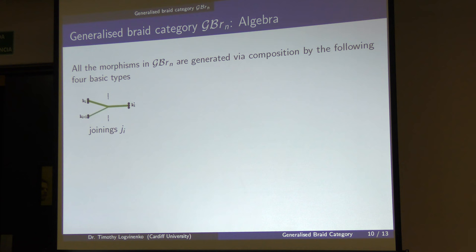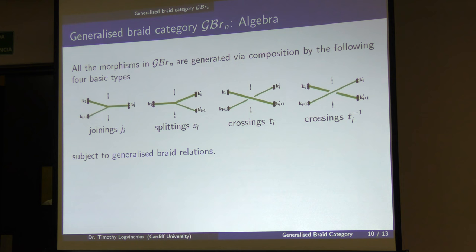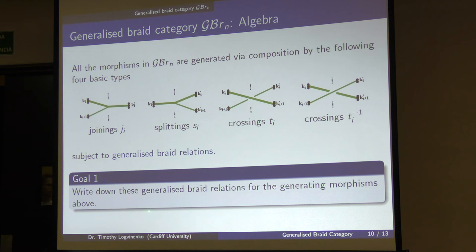All the morphisms in the generalized braid category are generated under composition by the following four basic types: joinings — two multiple strands coming together with nothing happening elsewhere — splittings, crossings over one way, and crossings over the other way. These are subject to generalized braid relations. Our goal number one — this is very much a work in progress, but one we hope to complete within about a year — is to write down these generalized braid relations for these morphisms.